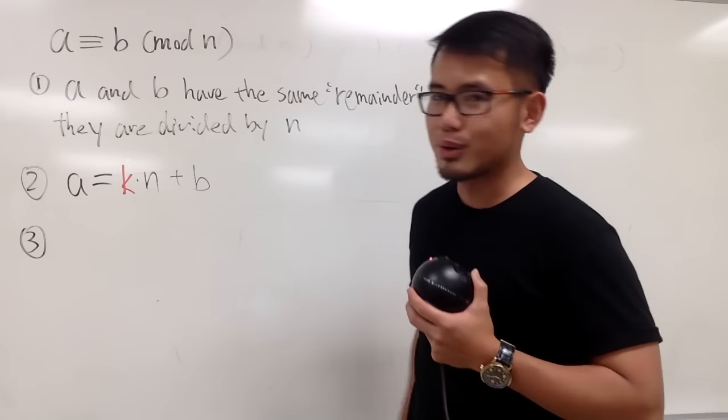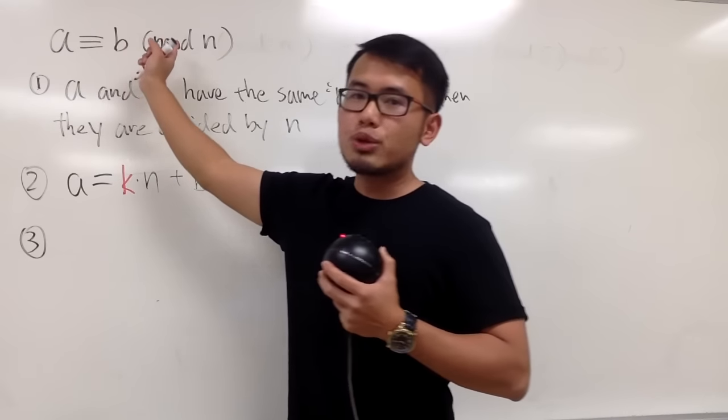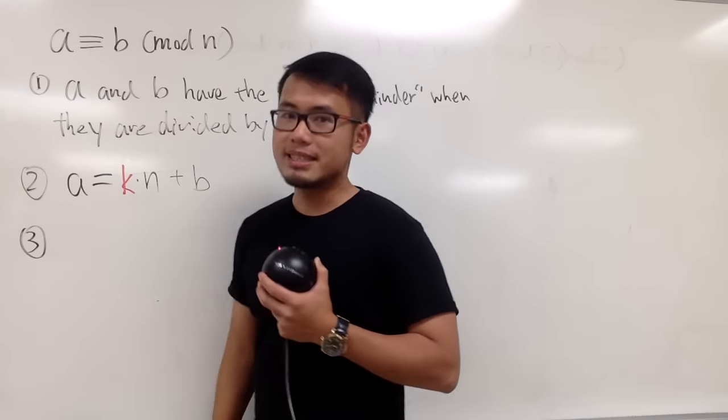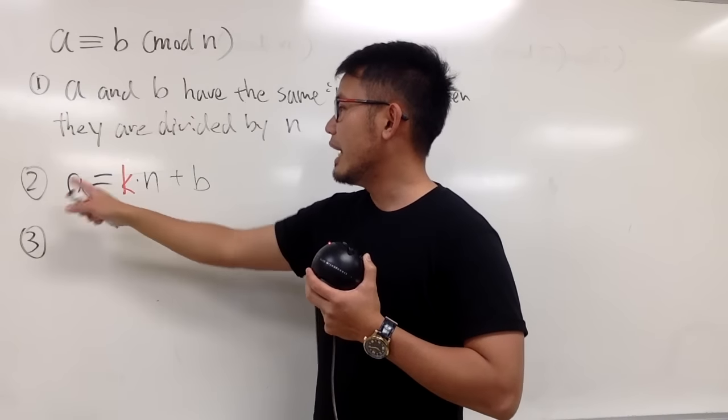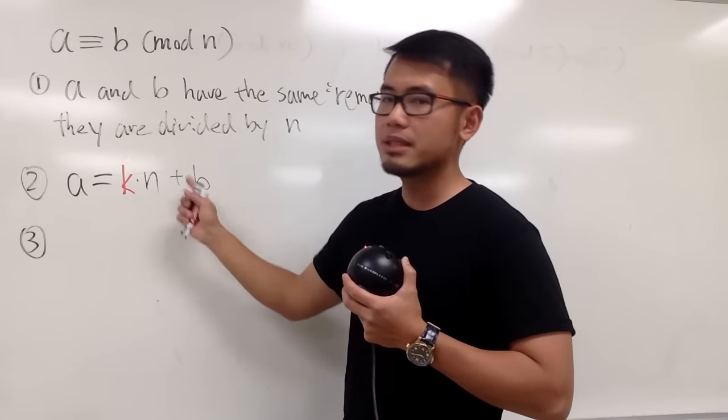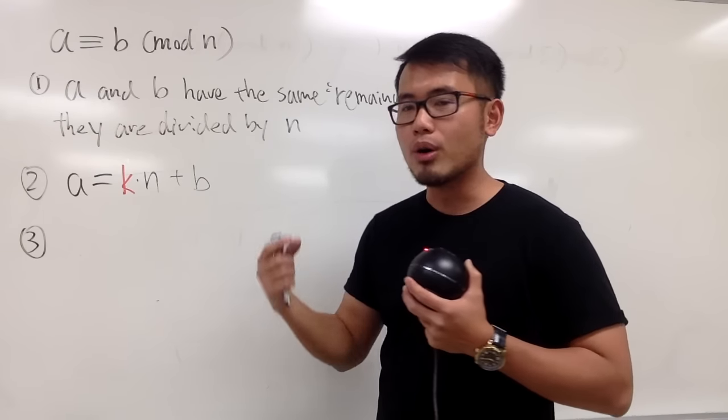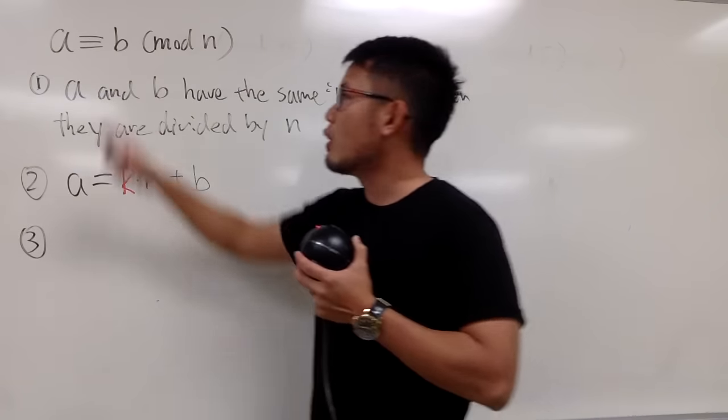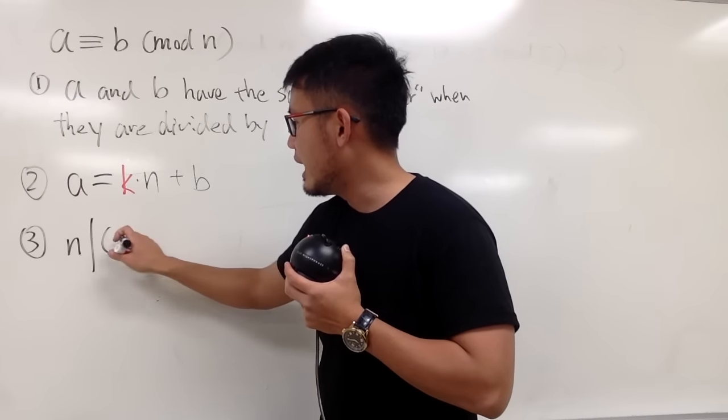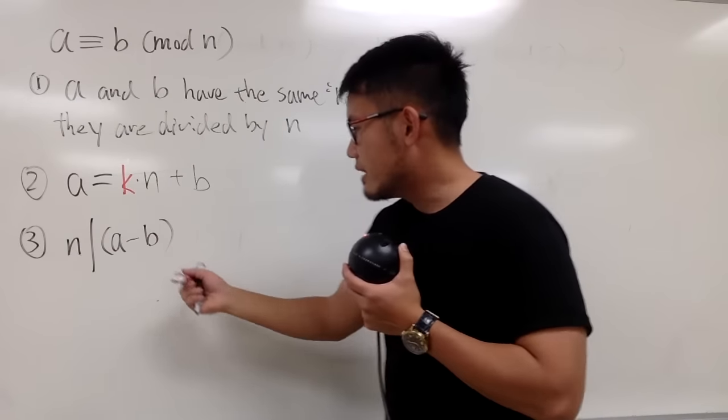The next thing is that I can just subtract b on both sides, right? And if you subtract b on both sides, you can see that a minus b is equal to k times n. In other words, a minus b is a multiple of n. So I can actually go from here and tell you guys that n divides into a minus b.